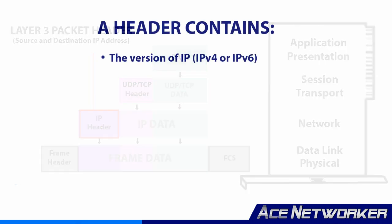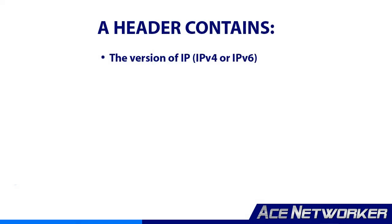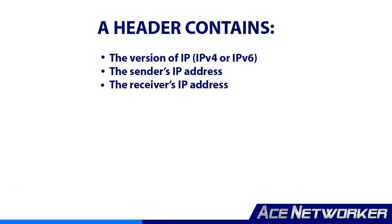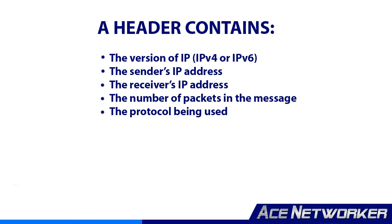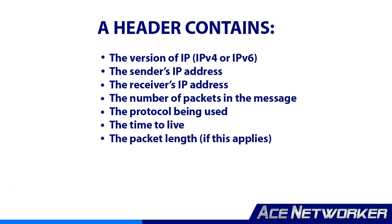A header can contain the following information: the version of IP (whether it's IP version 4 or IP version 6), the sender's IP address, the receiver's IP address, the number of packets in the message, the protocol being used, the time to live, the length of the packet if this applies, and synchronization data.